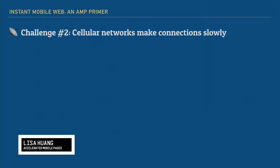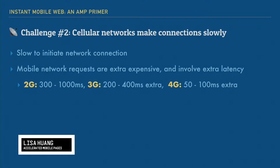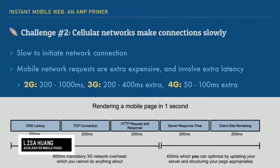The second challenge is that cellular networks make connections very slowly. When you initiate a network connection, there's a DNS lookup, a TCP connection, an HTTP request, and any SSL handshakes — that alone takes at least 600 milliseconds on a reliable 3G connection. Add in server response time, even if very fast, that's around 200 more milliseconds, and then client-side rendering. Regardless of how fast your server is or how great your client-side rendering tactics are, there's still a minimum of 600 milliseconds you simply cannot avoid. That's a fixed cost. Now imagine a 2G network or anything slower.